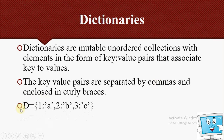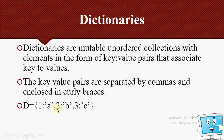For example, here we have a dictionary named D, starting and ending with curly braces — curly braces represent that this is a dictionary. We have key-value pairs: 1 is a key and A is a value, separated by a colon. This is the first key-value pair, this is the second, and this is the third. Each key-value pair is separated by commas.